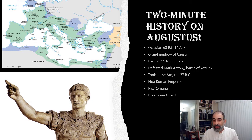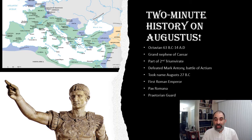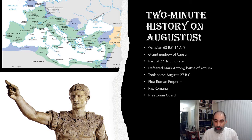Shortly after that, in 27 B.C., we start to call him Augustus — the revered one — and he takes the title of emperor. He becomes the first Roman emperor.